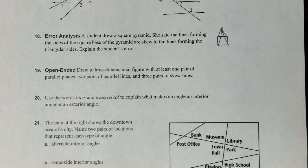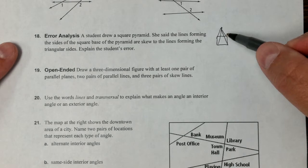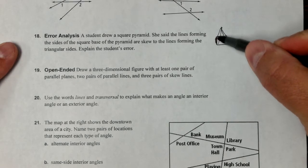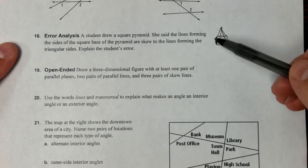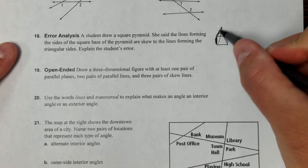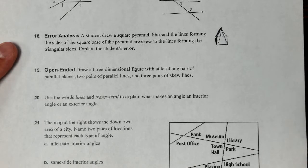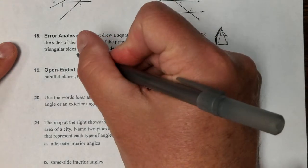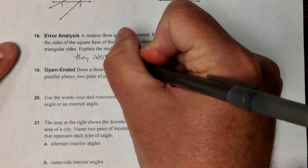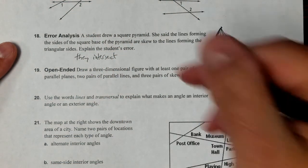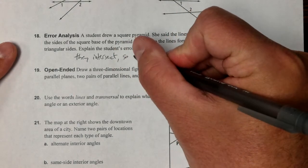She said that the lines forming the sides of the square base are skew to the lines forming the triangular sides, and we want to explain why that's wrong, basically explaining the error. So what she's talking about is like this as an example - skew to this one. And it's not because they intersect.